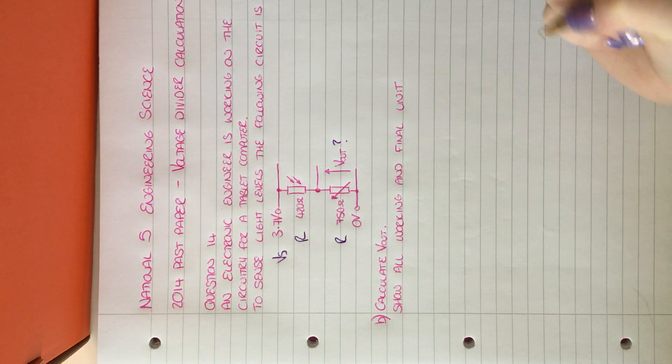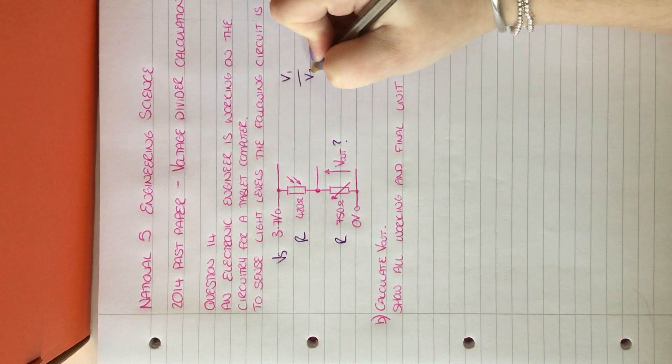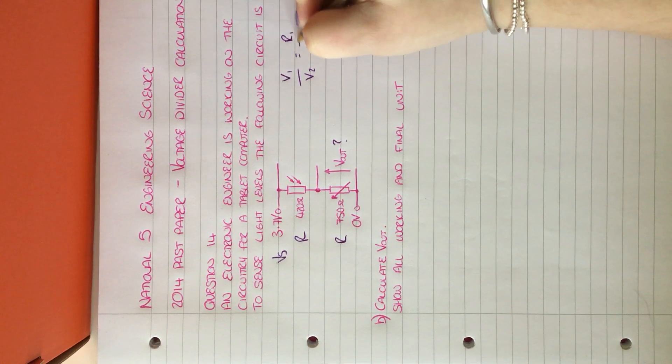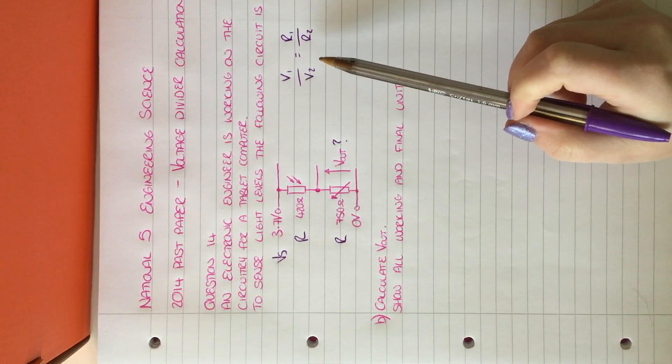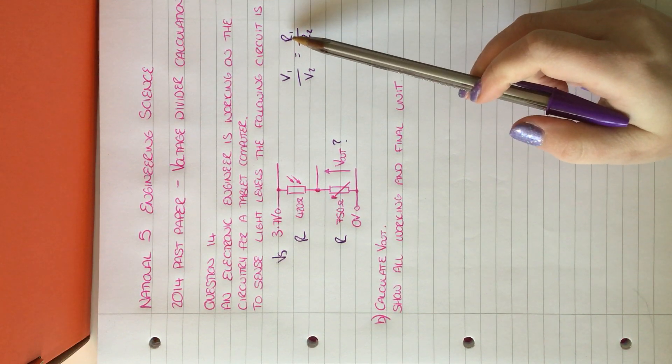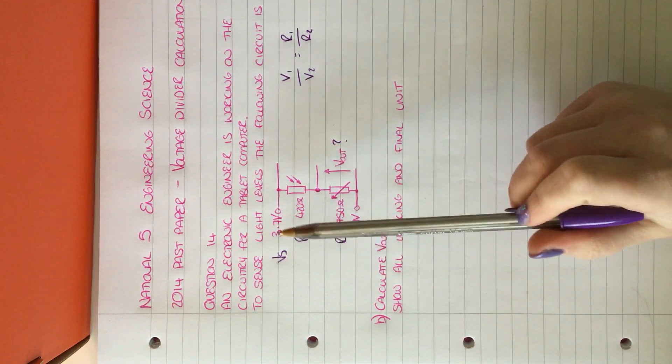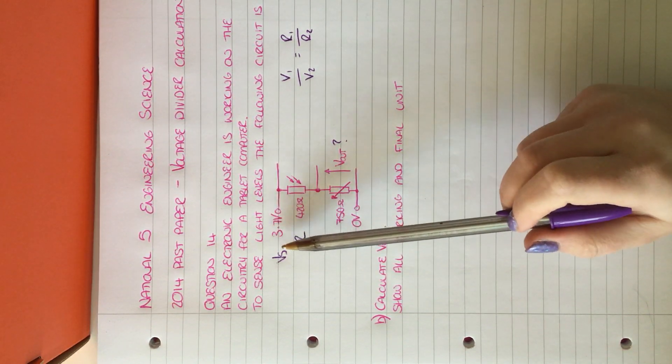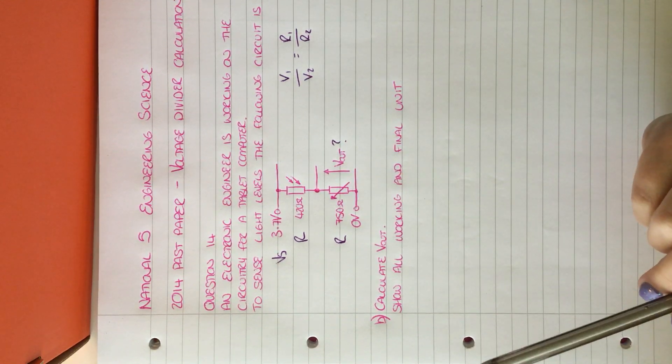From the data booklet, you will be given the equation V1 over V2 equals R1 over R2. Now for this equation, we can only use it if there is one unknown. In this instance, there's two unknowns because we don't have either of the voltages. Remember, the 3.7 volts is the voltage supply, not the voltage across either of these two resistors.